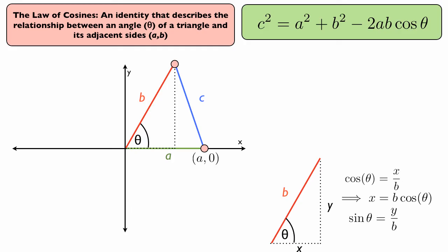Similarly, sine theta is defined as the opposite over the hypotenuse, or y over b. And by multiplying both sides by b, we have y is equal to b sine theta.